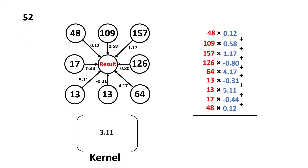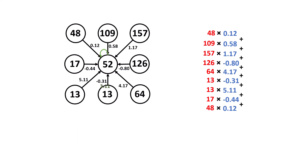To preserve the current node's information, we need to consider the missing kernel value 3.11. We simply add a self-loop, where the edge value for this self-loop is exactly 3.11. We then multiply the node's own value of 52 by 3.11 and include it in the result, which now replaces the current value.